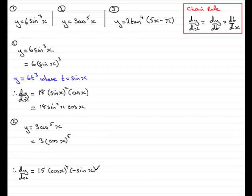We need to tidy this up, but we'll do that in a moment. What I'm going to do is just write back in what I was thinking. I was thinking that y equaled 3t⁵ where t was cos x. So we did dy/dt which was 15t⁴, so that's 15(cos x)⁴.